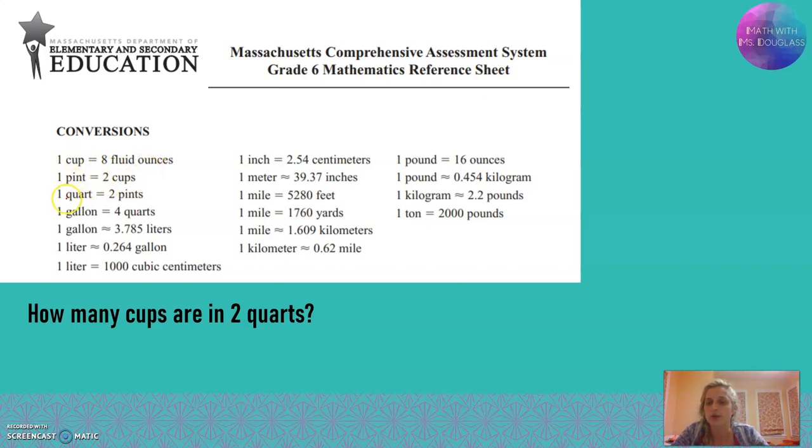One pint is two cups. One quart is two pints. One gallon is four quarts. I'm not seeing it. That's okay. Sometimes it takes two or even three steps to make your conversion.